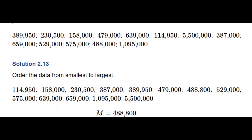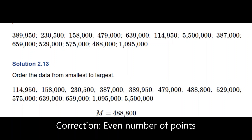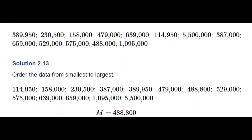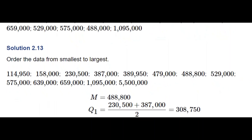Next we find Q1, the median of the first half of the data — all numbers below $488,800. Those numbers run from $114,950 to $479,000 and there are 6 values. The median of 6 values is the midpoint of the 3rd and 4th points, which are $235,000 and $387,000, giving Q1 = $308,750. We can see the actual median $488,800 in the data, but Q1 does not appear in the data set.